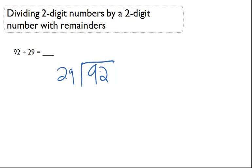Here we have to think about how many times 29 can go into 92. 29 goes into 92 three times.